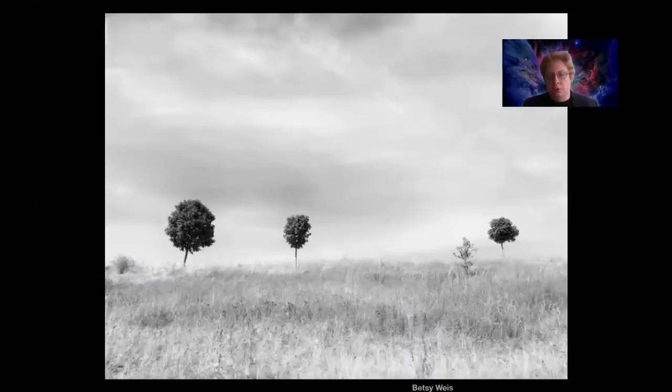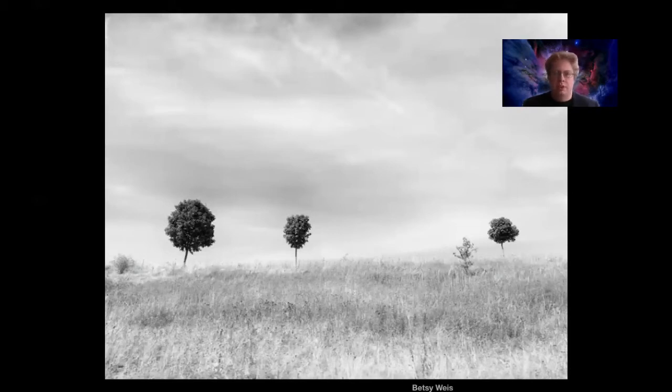We also can use clues such as the size of the object to give us a little bit of an idea. So intuitively our brain realizes that maybe this tree on the left here is closer to us than these other two because it's physically larger. And if they're all about the same size the larger one is probably the closer one.